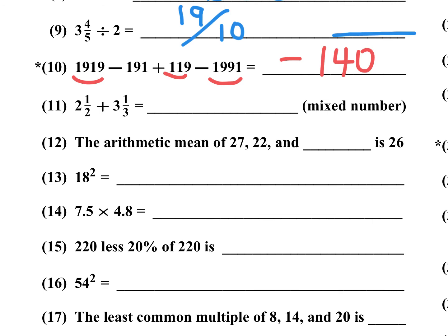Number 11: 2 and 1/2 plus 3 and 1/3, as a mixed number. One-half plus one-third: use cross multiplication — 1 times 3 is 3, and 1 times 2 is 2, so 3 plus 2 is 5 over 6. Then 2 plus 3 is 5. The answer is 5 and 5/6.